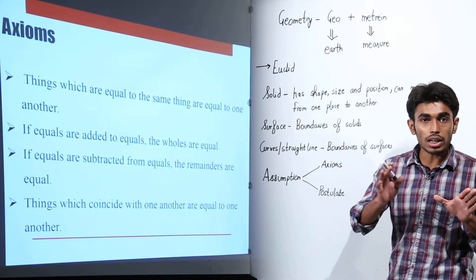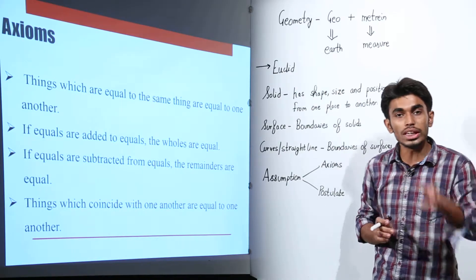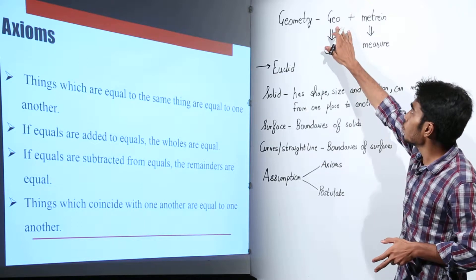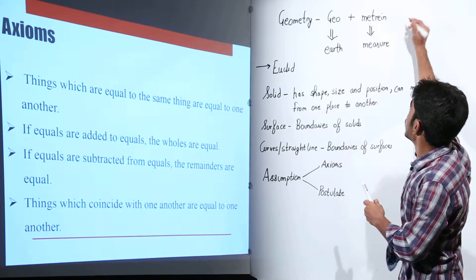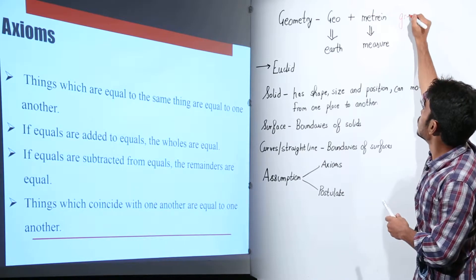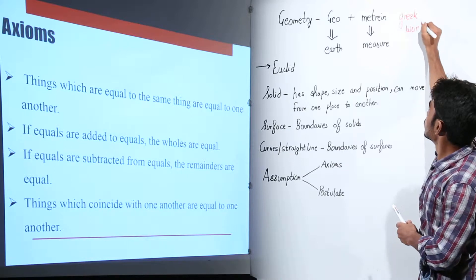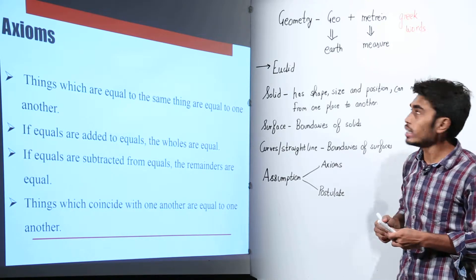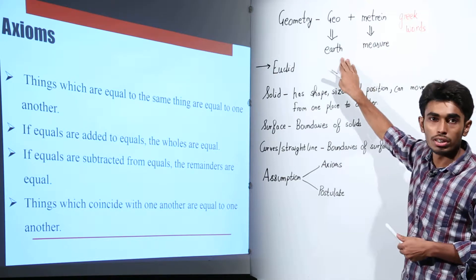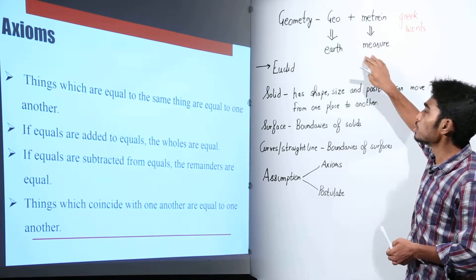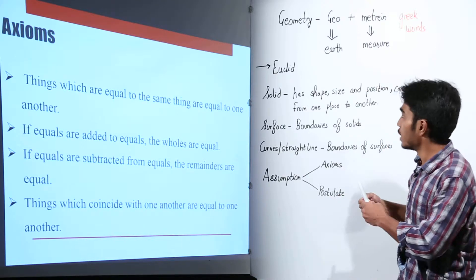Starting with the chapter: Geometry comes from two Greek words — Geo and Metrin. Geo means Earth in Greek, and Metrin means measurement. So Geometry basically means measurement of Earth.